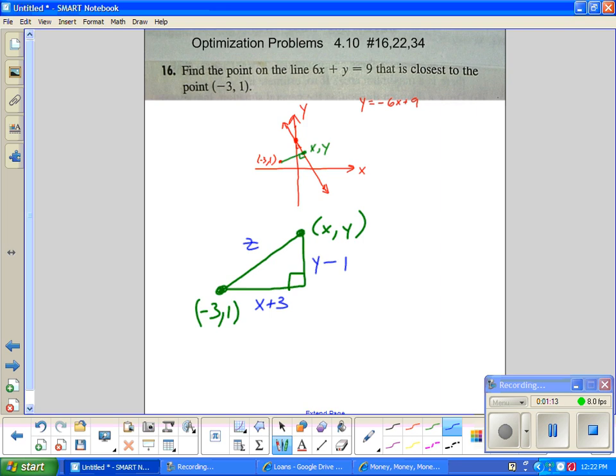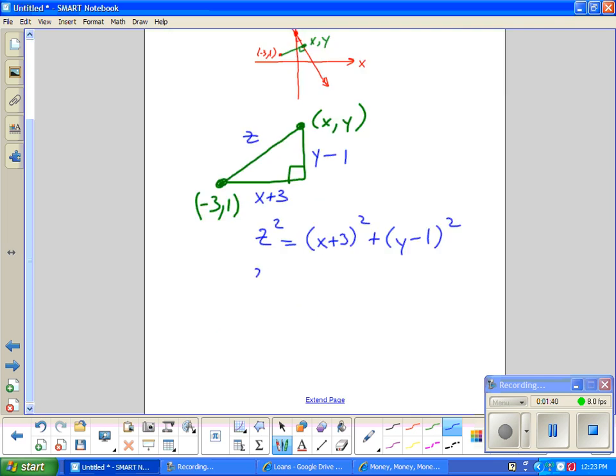I have Pythagorean theorem. z squared equals x plus 3 squared plus y minus 1 squared. This is an optimization problem, not a related rate. So everything on one side has to be in terms of one variable so we can minimize or maximize. But I have this handy relationship between y and x. I want to replace y with negative 6x minus 9 even before I square it. Negative 6x plus 3 squared plus negative 6x plus 9 minus 1 squared.